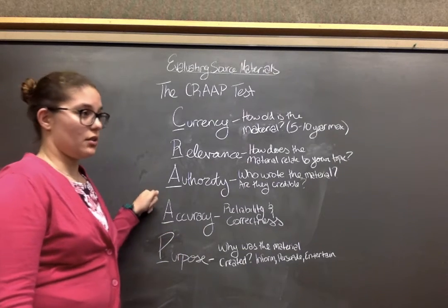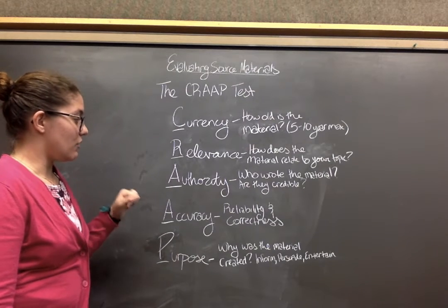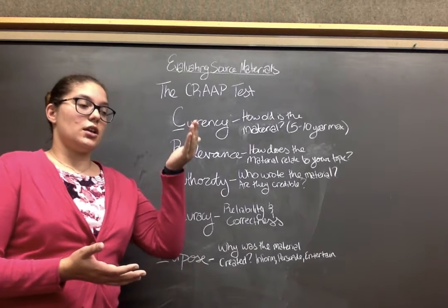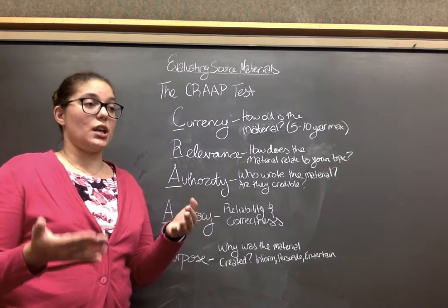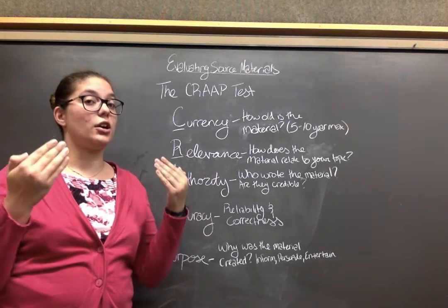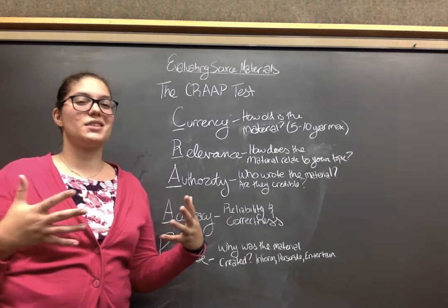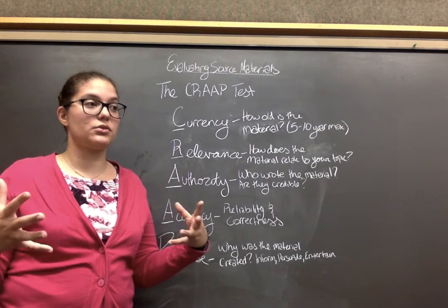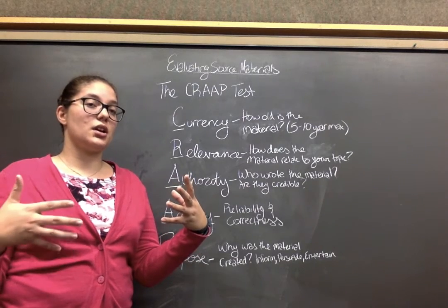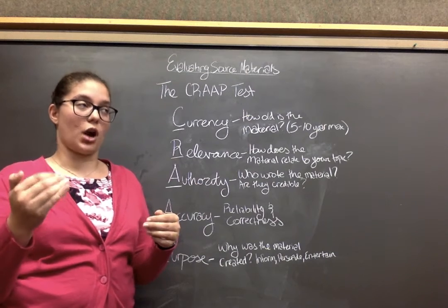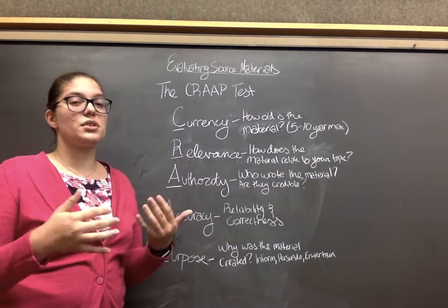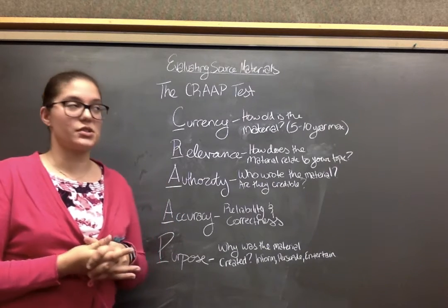The next letter is another A, which stands for accuracy. Is this source reliable? Does this source information match up with other source information? If you find two sources talking about the same thing and they don't agree or there are significant discrepancies, you should probably find a third source. If the third source agrees with the first, then the second is probably wrong, or vice versa. If your sources aren't really agreeing, you should find a different source.